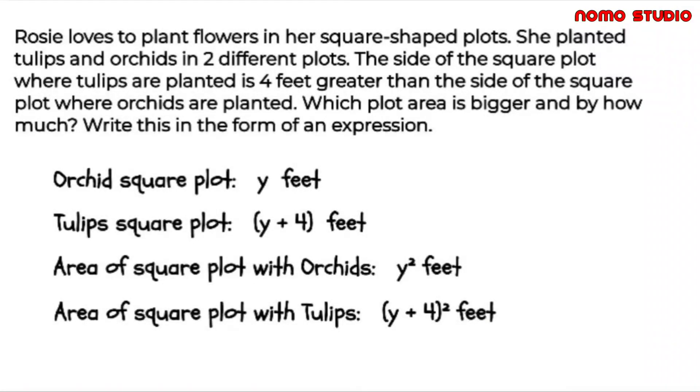It is already obvious that the area of the tulips plot is bigger than orchids plot. But the question is, by how much? For us to find how bigger is tulips plot, let's get the difference of the area of both plots. Let's subtract Y plus 4 squared and Y squared.